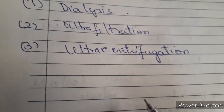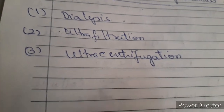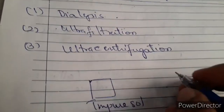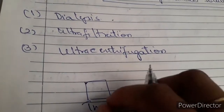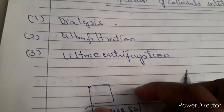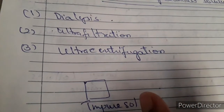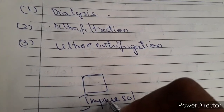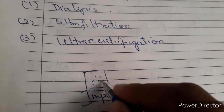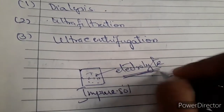In dialysis, you have an impure colloidal solution. This impure solution contains impurities which are removed by the process of diffusion, using semi-permeable membranes or suitable membranes. Through these membranes, the impurities are removed. The impurities are basically electrolytes present in the colloidal solution.